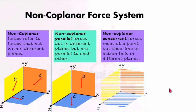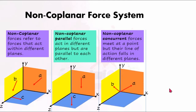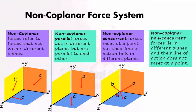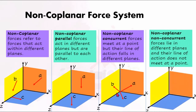For non-coplanar concurrent, the forces lie in different planes but their lines of action still meet at a point. For example, forces acting along the x, y, and z axes would be concurrent but also non-coplanar. Finally, non-coplanar non-concurrent means the forces are in different planes and their lines of action do not meet at a point.